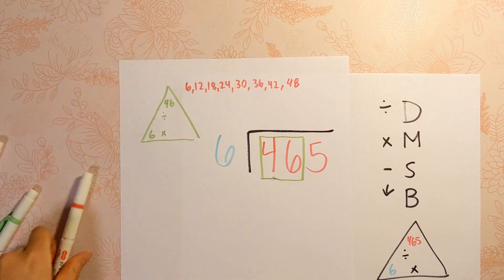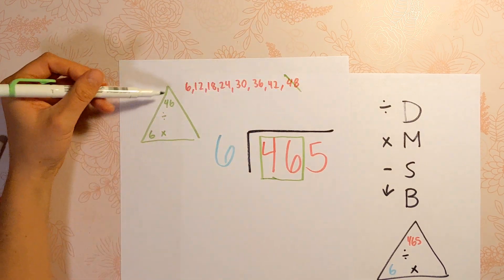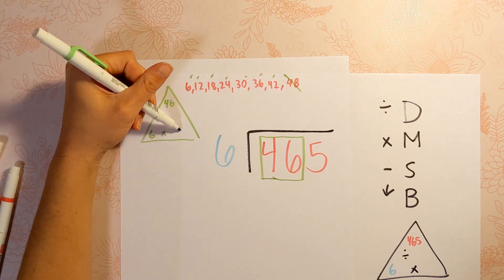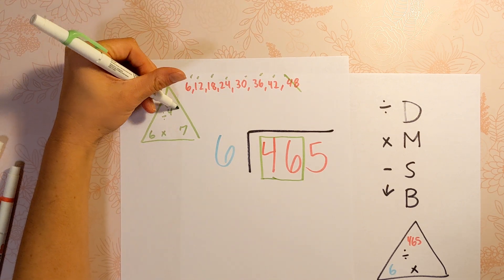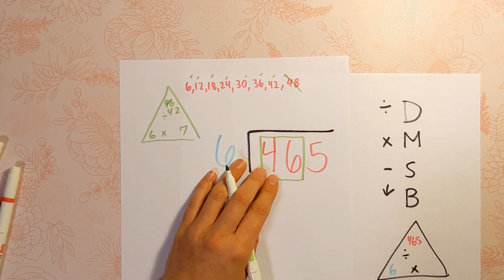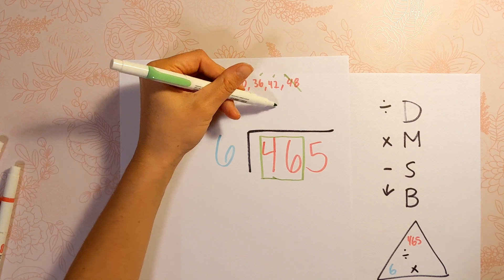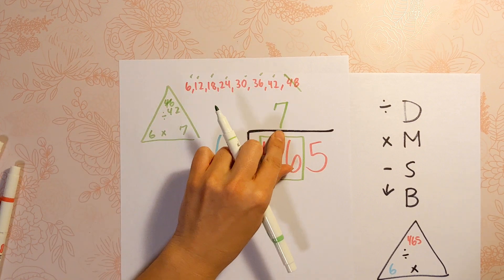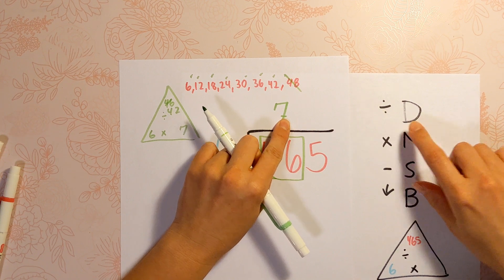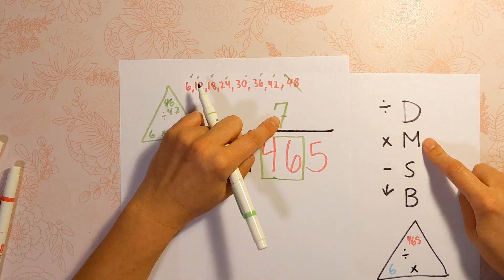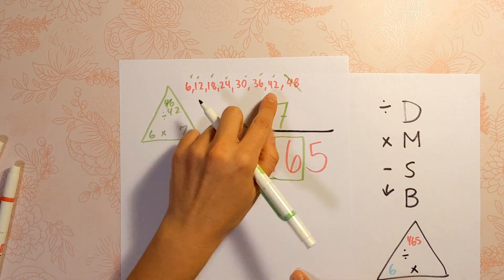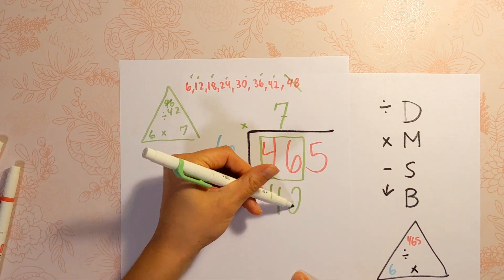You can't go over, right? So 6 times 7 gets us up to 42, which is the closest we can get to 46. That's how many 6's fit into 46. Put your 7 right on top of the digits we were just working with. Now we multiply using the last thing we touched, which is the 7. 7 times 6 is 42. Put that down below.